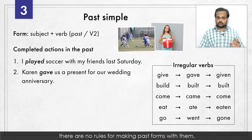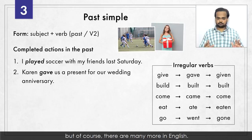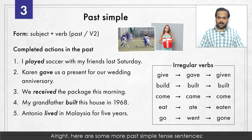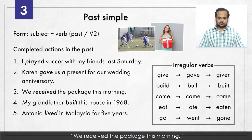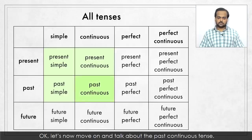There are no rules for making past forms with irregular verbs, so you have to memorize the correct forms. You can see some examples on the screen, but of course there are many more in English. Here are some more past simple tense sentences: We received the package this morning. My grandfather built this house in 1968. Antonio lived in Malaysia for five years. Let's now move on and talk about the past continuous tense.